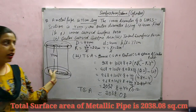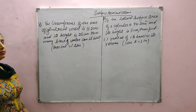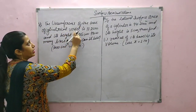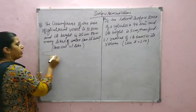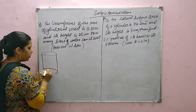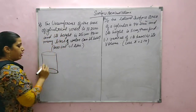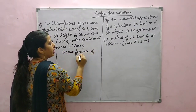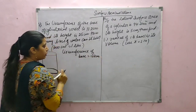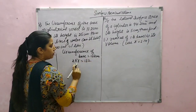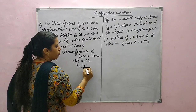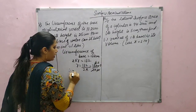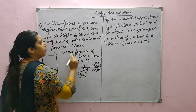Now we will do different questions based on volume of cylinder. First question: the circumference of the base of a cylindrical vessel is 132 cm. Circumference of the base is 132 cm. Since it is a circular portion, we find R: 132 upon 2 pi equals 132 upon (2 into 22 by 7). Solving, R equals 21 cm.